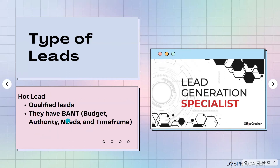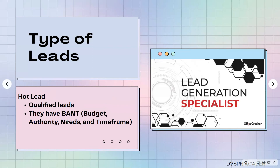Next is the hot lead — they are considered qualified leads. These are the ones ready to close a deal with the client. They are qualified because they have a budget — for example, a coaching business client has a budget to sign up for a course. They also have authority — they are the decision-makers and don't need to ask anyone else. They have a need — for example, they want to learn about real estate investing — and a time frame: they will sign up as soon as possible. In an e-commerce setup, for example, the customer has a budget, is the decision-maker in the family, needs the product, and wants it as soon as possible.